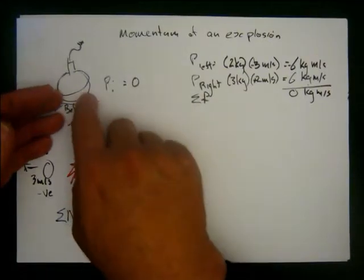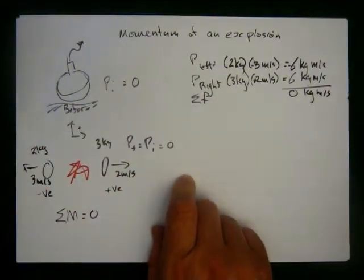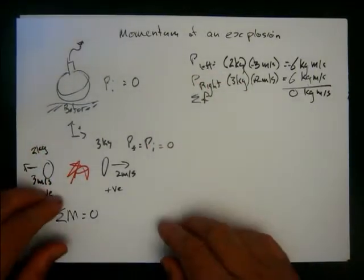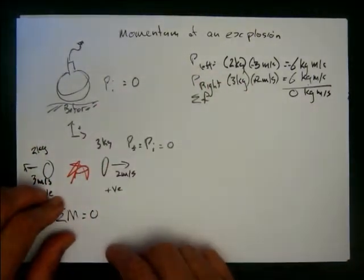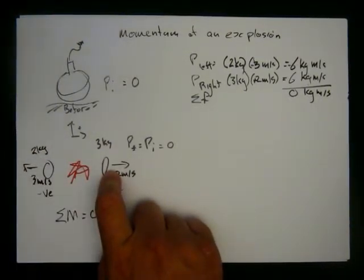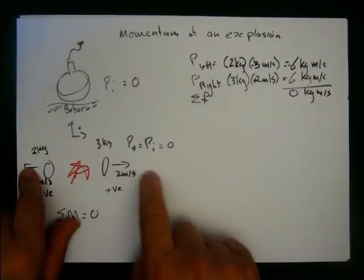If you throw something out that way, you must also throw something out that way to keep momentum equals zero. And actually, this is how rockets work. If you have a rocket motor, you throw hot gases out the back. Then the rocket's going to go off that way.